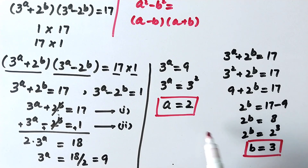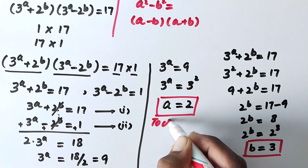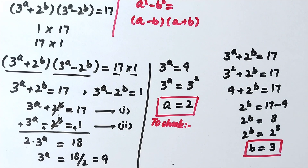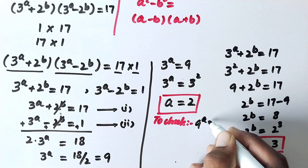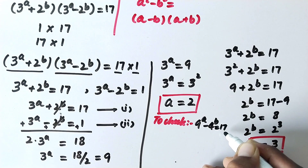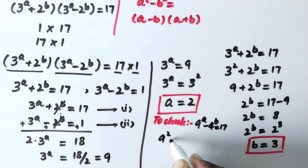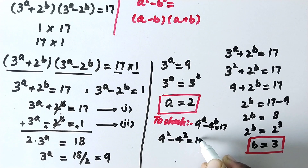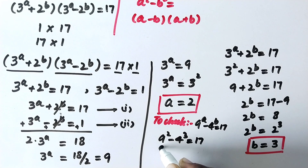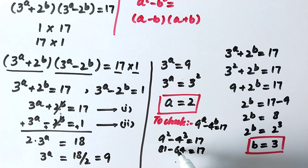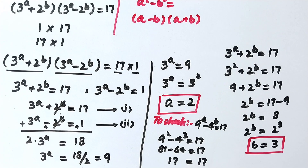The values of a and b we found are positive integers. To verify, we check the original equation: 9 to the power a minus 4 to the power b equals 17. Putting in a equals 2 and b equals 3 gives 9 squared minus 4 cubed, which is 81 minus 64, which equals 17. The left hand side equals the right hand side, verifying that our answers are correct.